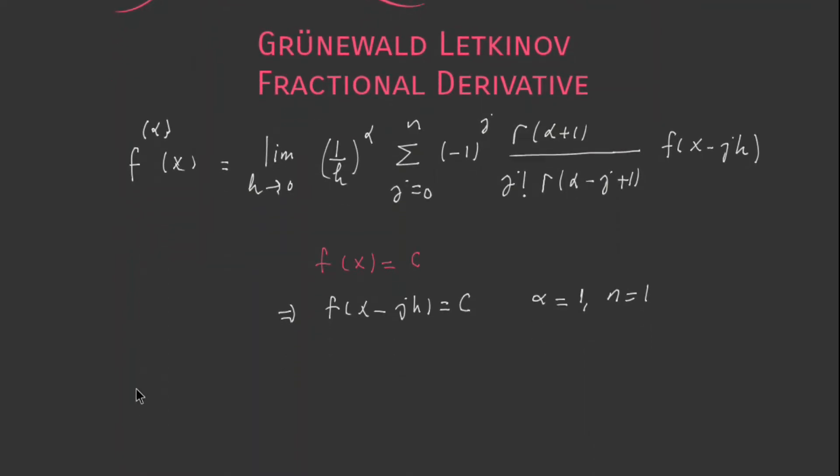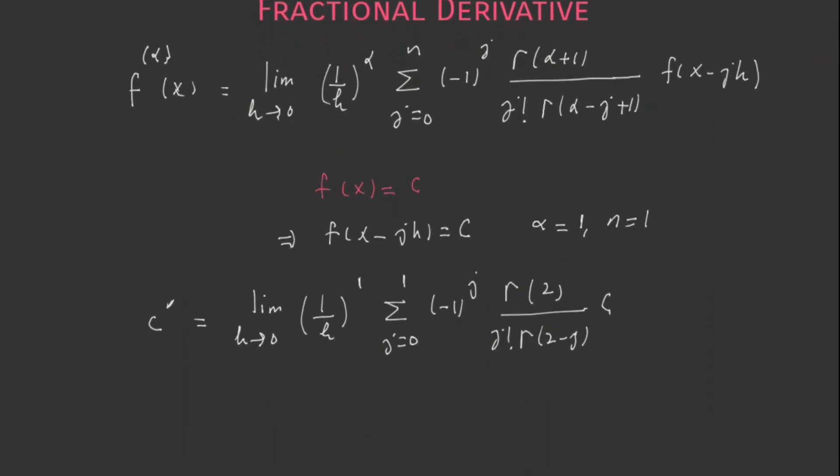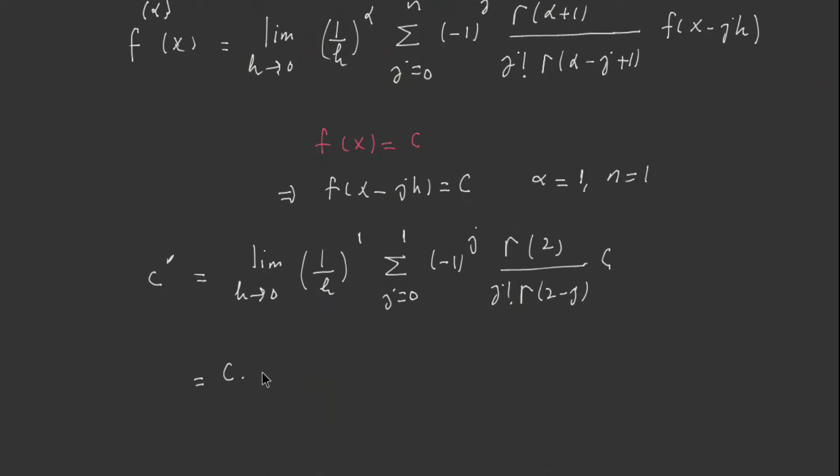Now this becomes: the constant whose first derivative is equal to limit h tends to 0, 1 over h to the power 1, summation j from 0 to 1, negative 1 to the power j, gamma of 2 over j factorial gamma of 2 minus j, times constant c. I can put the constant outside. It is limit h tends to 0, 1 over h. And now the summation has only two values, j=0 and j=1. When j is 0, this becomes negative 1 to the power 0, which is 1.